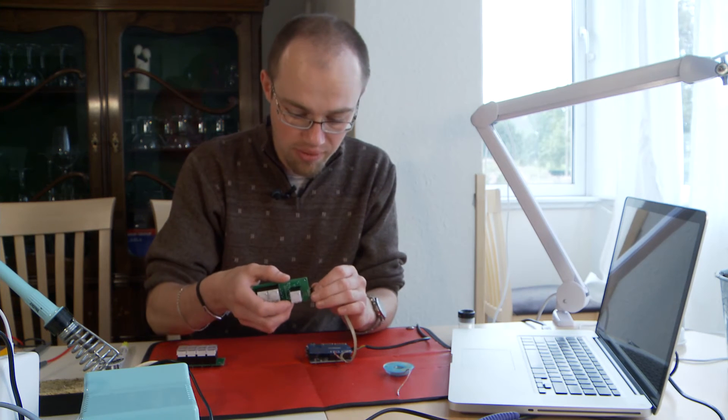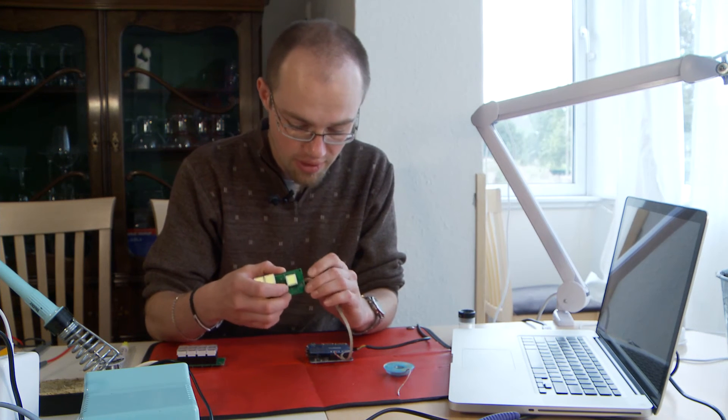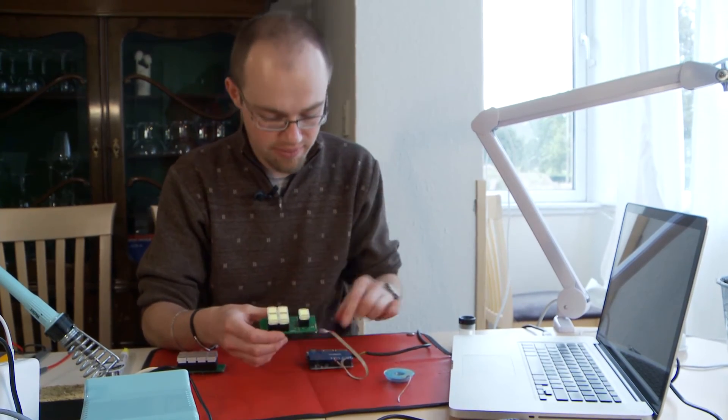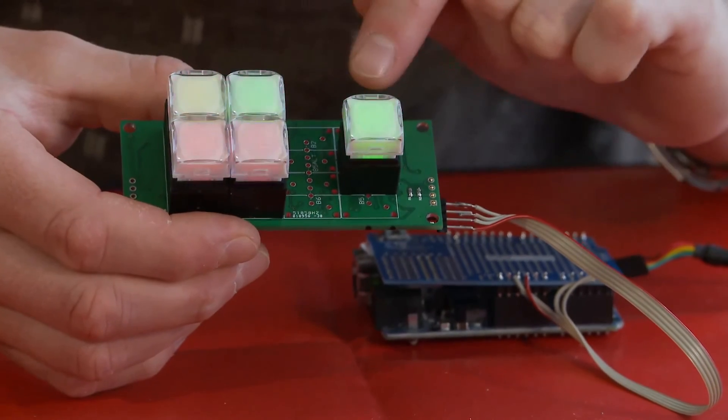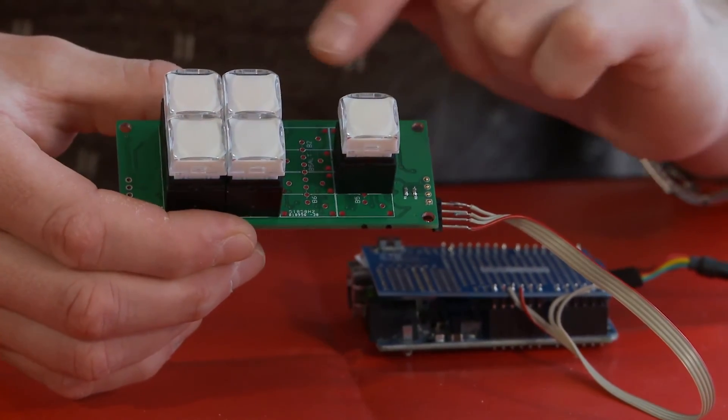I am just connecting now the power and you can see that the buttons are lit. I reset the board and you can see that all the colors are running through the buttons.